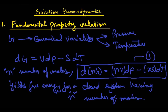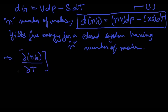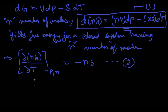We name this equation as number one. Now we try to put certain constraints on this. The first thing we are going to do is consider constant pressure. At constant pressure, dP will be zero, and what we can write is (∂(nG)/∂T) at constant P and N equals minus nS. We name this equation 2.